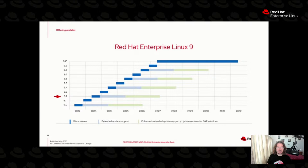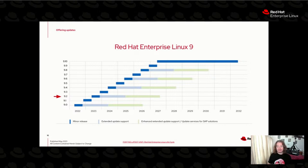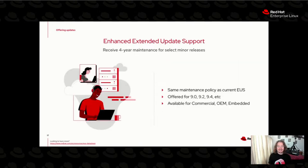With EUS you can park your operating system on a specific release for up to two years. We have certain cases like our partnership with SAP where it takes quite some time — especially between majors — to get a workload certified, because certain certifications require everything to be recertified every time the kernel number or release version changes. With SAP in particular, two years wasn't quite enough — by the time the two-year certification process was done, it was time to move on to the next one.